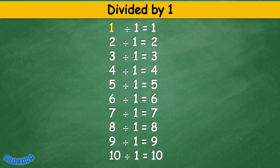Divided by 1: 1 divided by 1 equals 1, 2 divided by 1 equals 2, 3 divided by 1 equals 3, 4 divided by 1 equals 4, 5 divided by 1 equals 5, 6 divided by 1 equals 6, 7 divided by 1 equals 7, 8 divided by 1 equals 8, 9 divided by 1 equals 9.